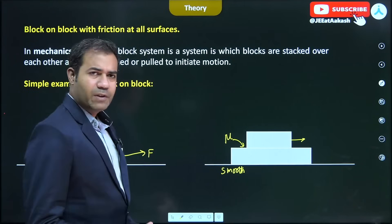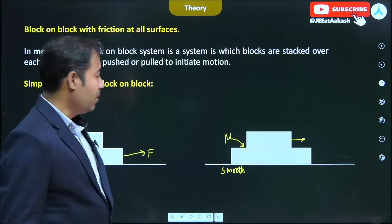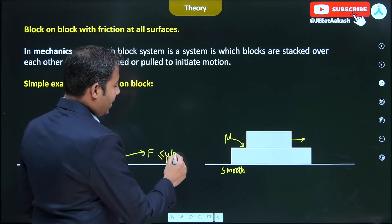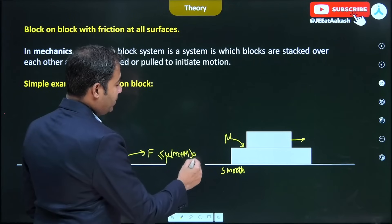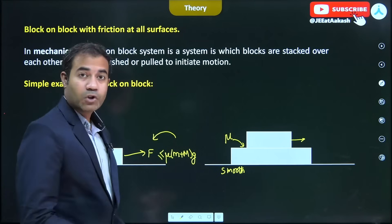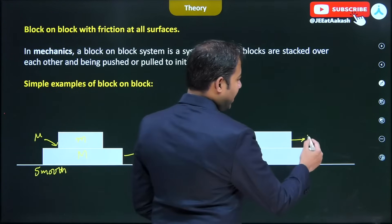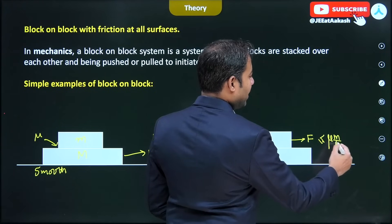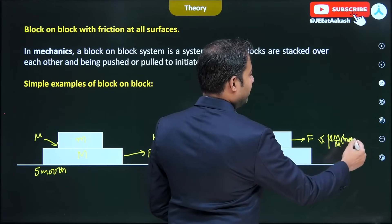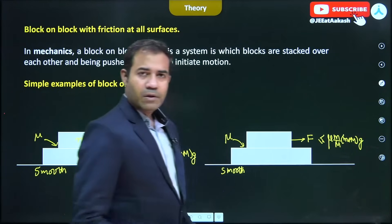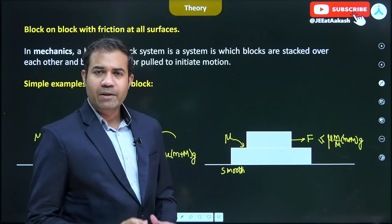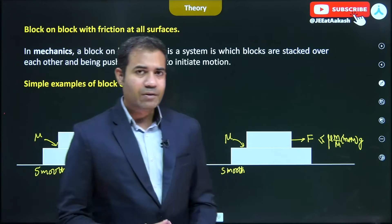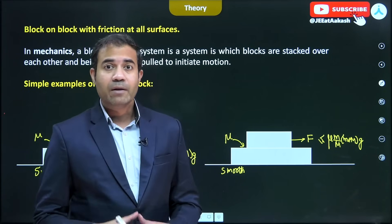In this kind of problem, we know F must be less than or equal to mu times (M plus m) times g for no slipping of the system, whereas if force is applied on the upper block, F must be less than mu times (m / M) times (m plus M) times g. This is only valid when the ground is smooth, but in this class we are going to discuss problems where the ground is also rough.